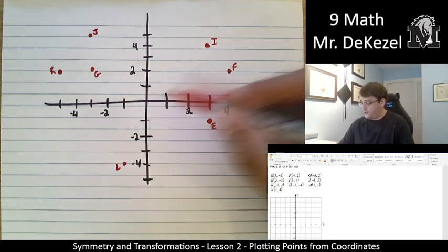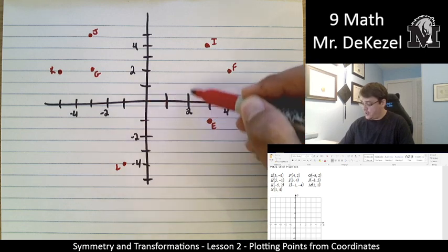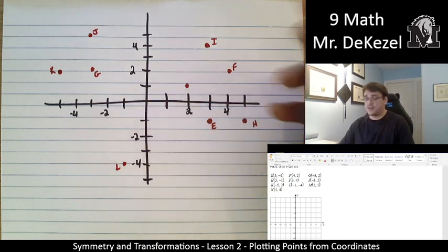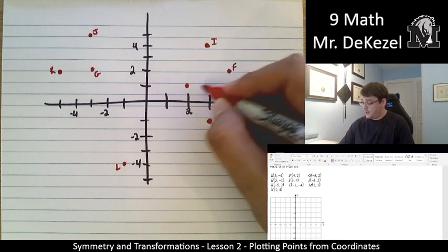Point M is 2, 1. So 1, 2 to the right and 1 up. Positive 2, positive 1. That is point M.